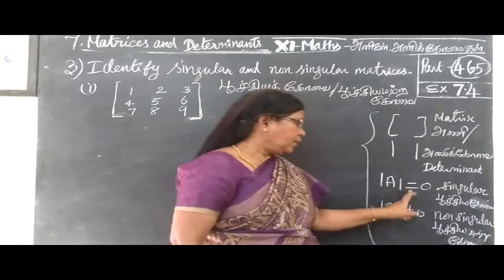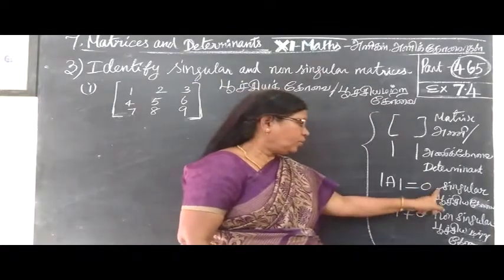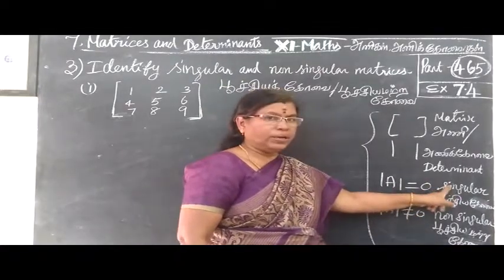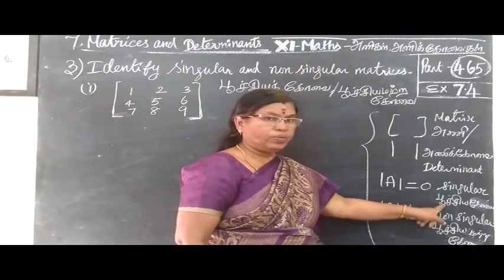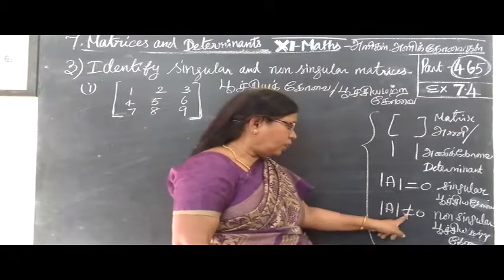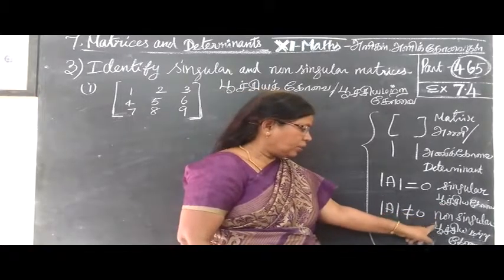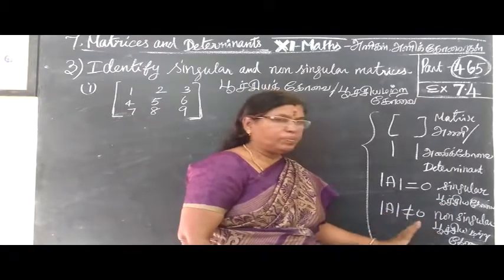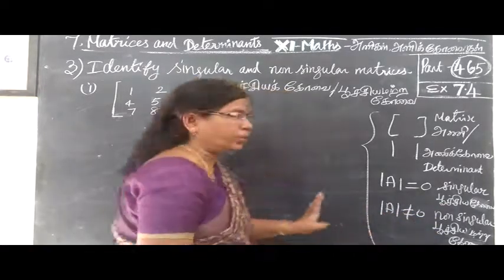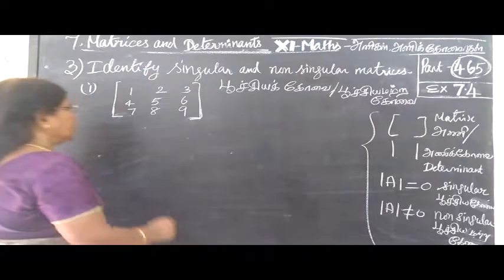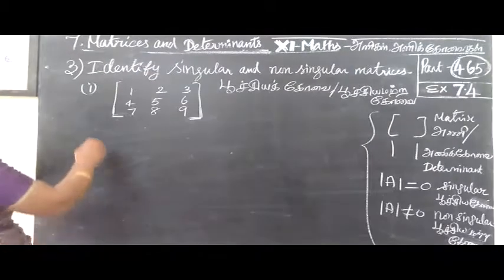So the conditions are: determinant of A is zero — singular. Determinant of A not equal to zero — non-singular. This is the condition.